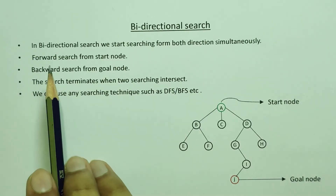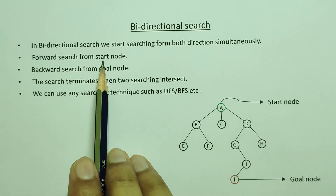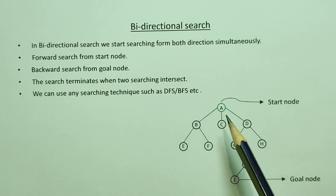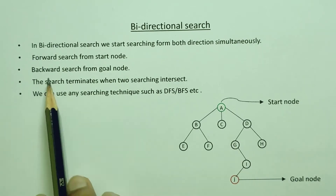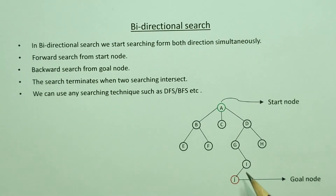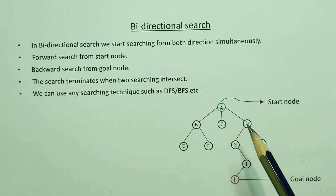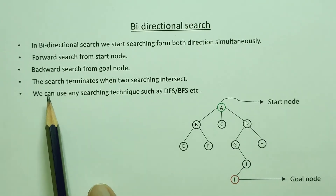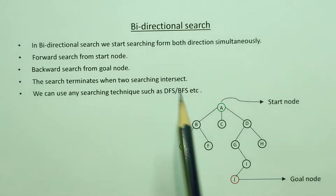The forward search starts from the start node, and the backward search starts from the goal node. The search terminates when the two searches intersect.